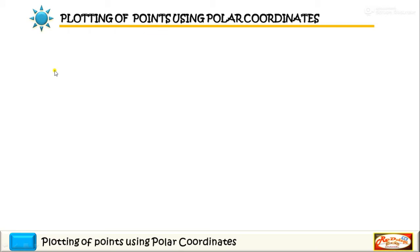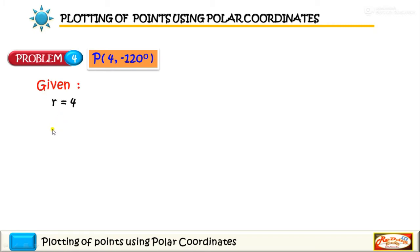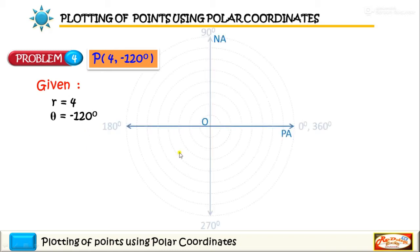Okay, we have the last point to be plotted. So we have point 4, R is equal to 4 and the polar angle theta is negative 120. Indicating the given here, so R equals 4 and theta equals negative 120. Again, draw the normal and the polar axis.